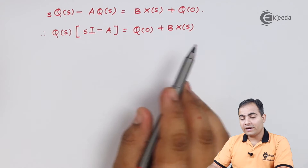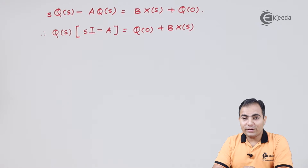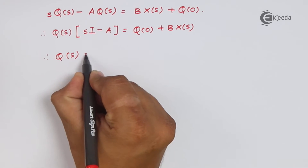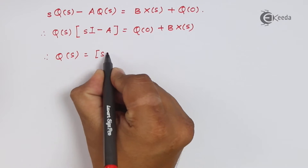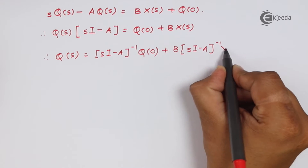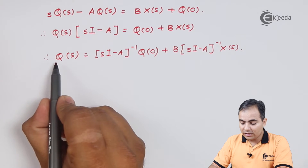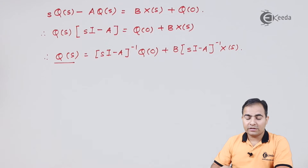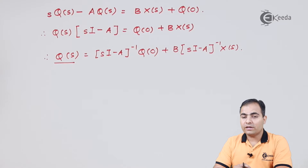Now I'll rearrange by multiplying both sides by (sI − A) inverse. So on both sides, q₀ and B·X(s) are multiplied by (sI − A) inverse. This gives us the equation for Q(s). This whole Q(s) is my state vector, and this equation gives us the value of the state matrix and the response in the Laplace domain for a continuous time system.